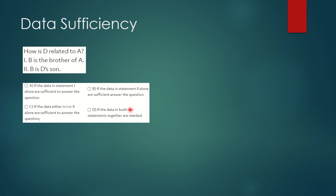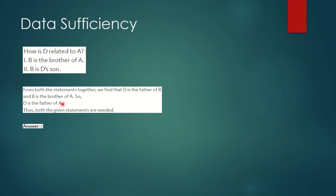Next question: how is D related to A? Statement 1 says B is the brother of A. Statement 2 says B is D's son. Using Statement 1 alone, we cannot establish the relation between D and A. Using Statement 2 alone is also insufficient. But combining both: B is the brother of A, and B is D's son, meaning D is the father of B. Since B is A's brother, D is the father of A. Both statements are needed, so the final answer is option D.